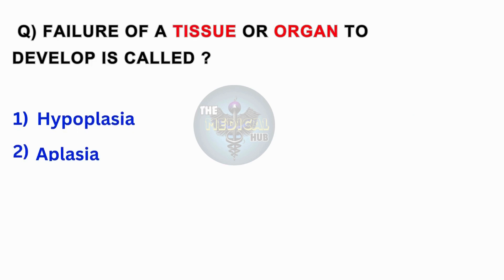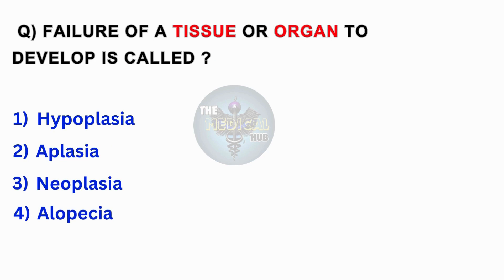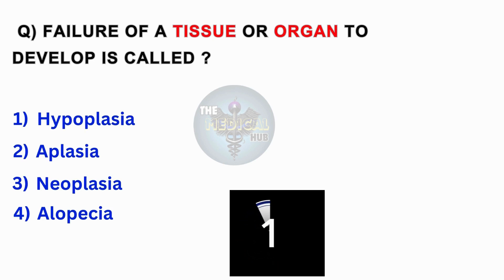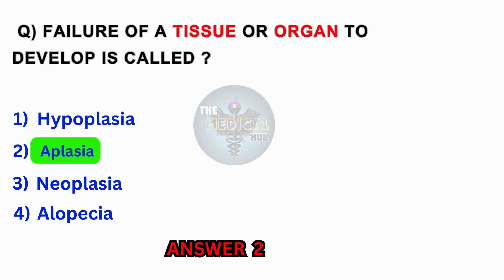Failure of a tissue or organ to develop is called? Hypoplasia, aplasia, neoplasia, alopecia. Answer 2: Aplasia.